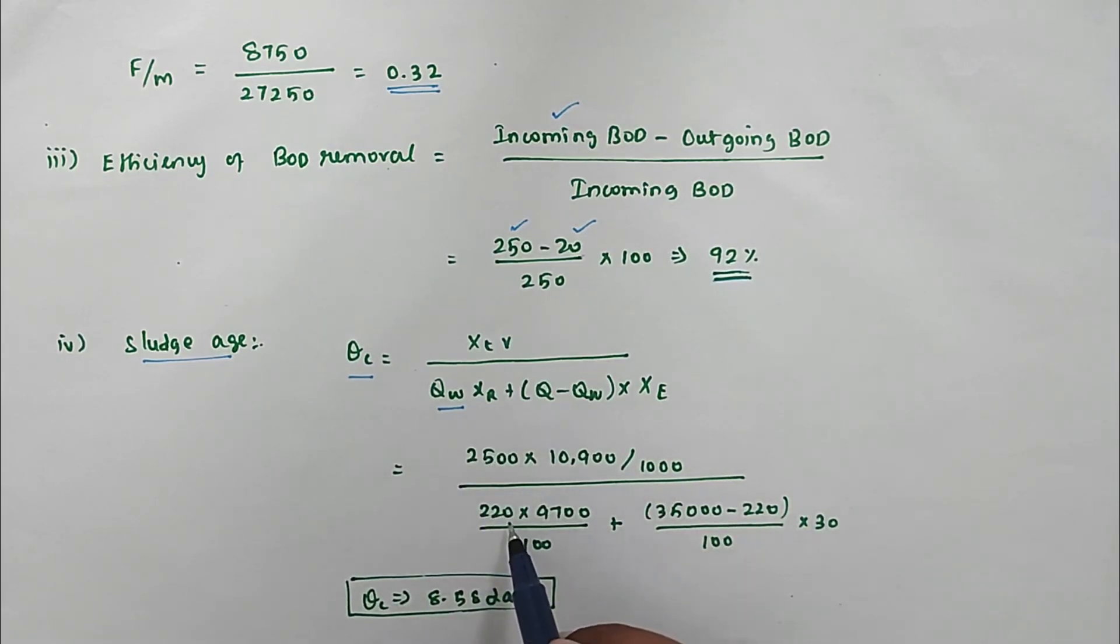Divided by QW 220 times 9700 divided by 100, plus the Q value 35,000 minus QW 220 divided by 100 times XE is 30. Solving this, we got the value of theta C equals 8.52 days. This is the sludge age.